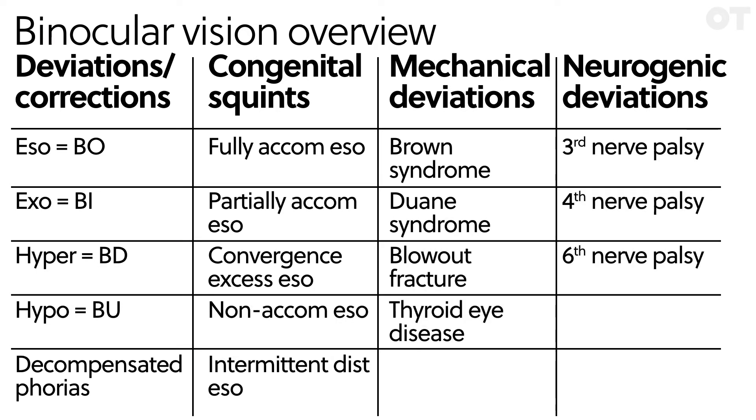All optometrists are trained to do cover tests, stereo tests, and motility. We have two types of cover tests: the cover-uncover for manifest deviations, and the alternating cover test for latent phoria. For an ESO deviation, going from in to out, you'd use a base-out prism. For an EXO deviation, going from out to in, you'd use base-in. For hyper or hypo deviations, you'd use base-down or base-up prisms. For decompensated phoria, you need to know which direction the deviation is going and how it's decompensated, then use the prism accordingly.